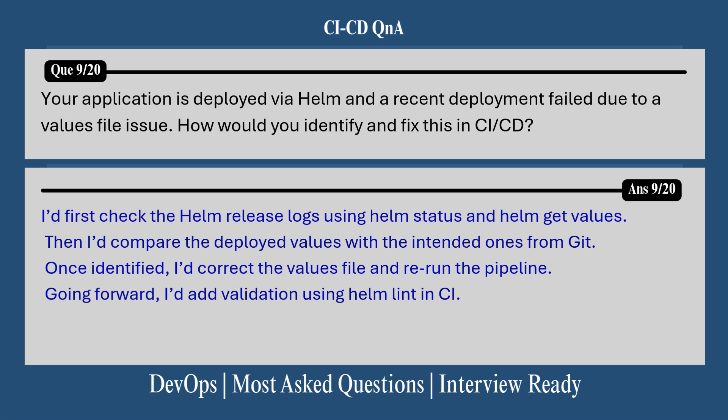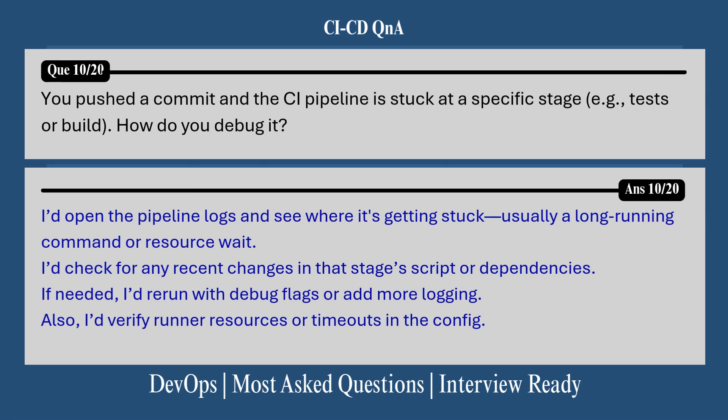Question 9: Your application is deployed via Helm and a recent deployment failed due to a values file issue — how would you identify and fix this in CI/CD? I would first check the Helm release logs using `helm status` and `helm get values`. Then I would compare the deployed values with the intended ones from the repository. Once identified, I would correct the values file and rerun the pipeline. Going forward, I would also add validation using `helm lint`.